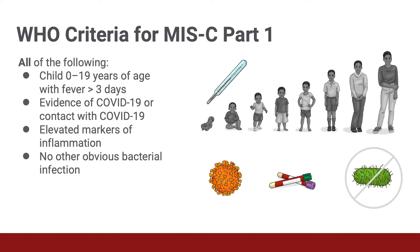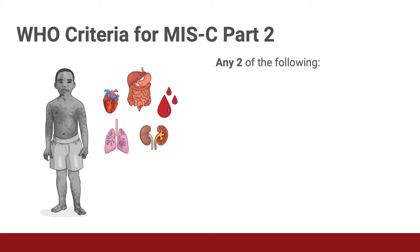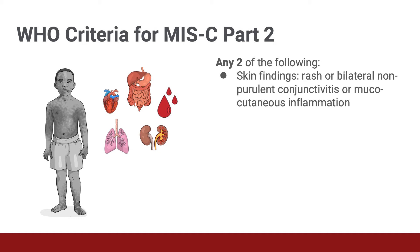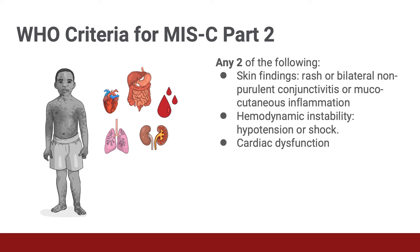The second part of the WHO criteria requires abnormalities in two out of five organ systems. Skin findings such as rash or mucocutaneous inflammatory signs on the mouth, hands, or feet — this is proven to be the most common finding. Hemodynamic instability as seen by hypertension or shock. Cardiac dysfunction as seen by echo findings or elevated troponin or elevated proBNPs in the lab work. Evidence of coagulopathy as seen by elevated PT or PTT as well as D-dimers in the blood work. And lastly, GI dysfunction evidenced by diarrhea, vomiting, or abdominal pain.